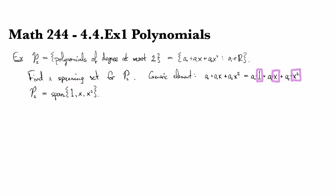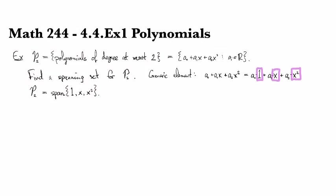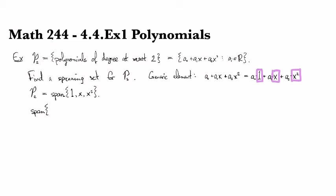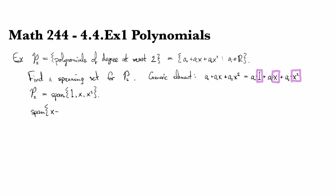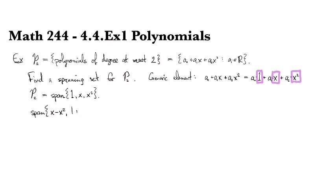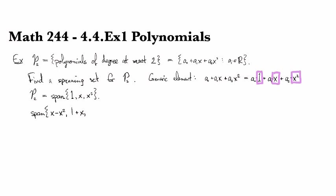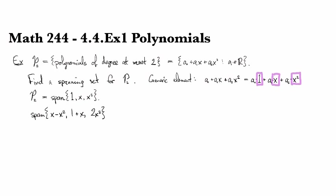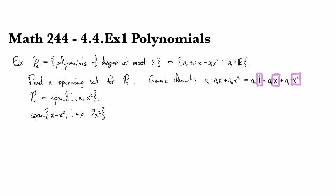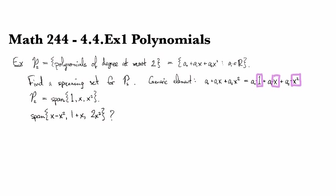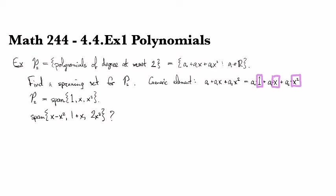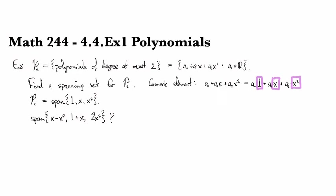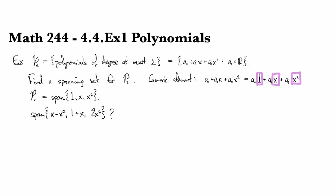Alright, so maybe you're asked, what is the span of x minus x squared, 1 plus x, and 2x squared something like that. Identify this span. Well, let's see. We might make the guess that any quadratic polynomial can be written as a linear combination of these. Is that possible?